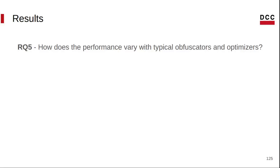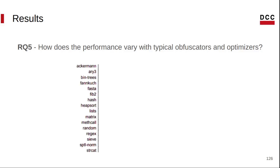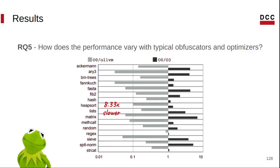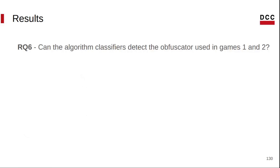Another research question is: how does performance vary with typical obfuscators and optimizers? To answer this question, we use the C programs from the benchmark game dataset. We show numbers for Clang -O3 and OLLVM. On average, the obfuscated programs are 8.33 times slower than the programs compared with Clang -O0, and the optimized programs are 2.32 times faster than what Clang -O0 produces. We saw game 2, which relies on the premise that the classifier knows the obfuscation strategy used by the evader. However, discovering the strategy applied to programs is not a trivial task.